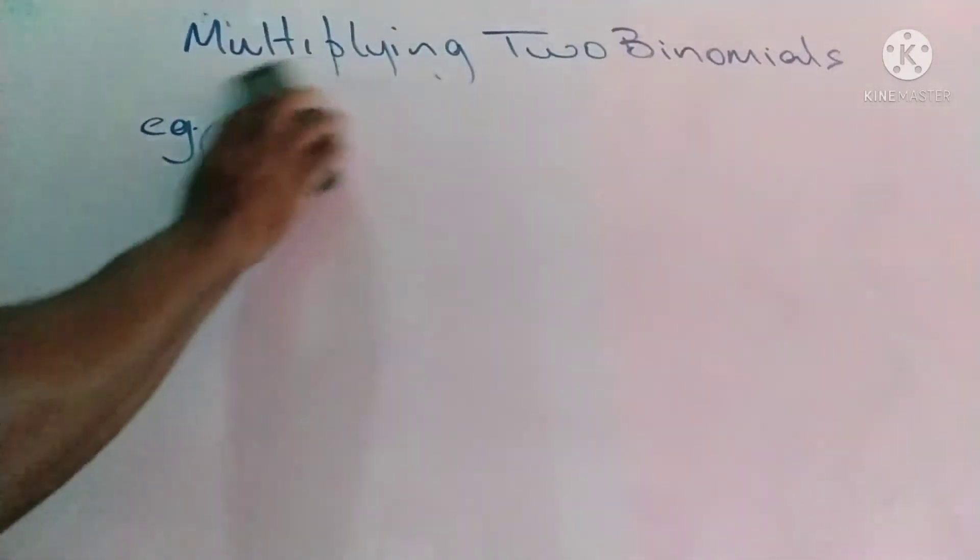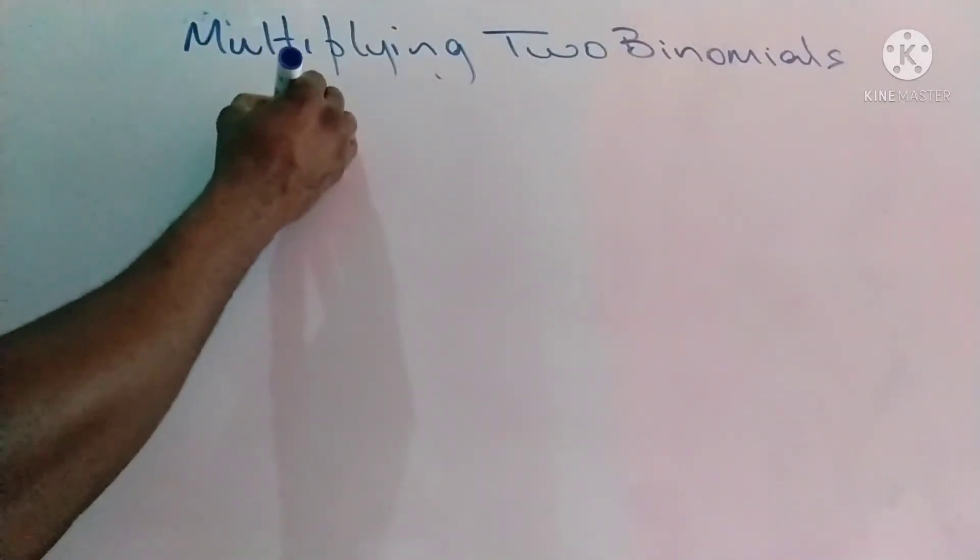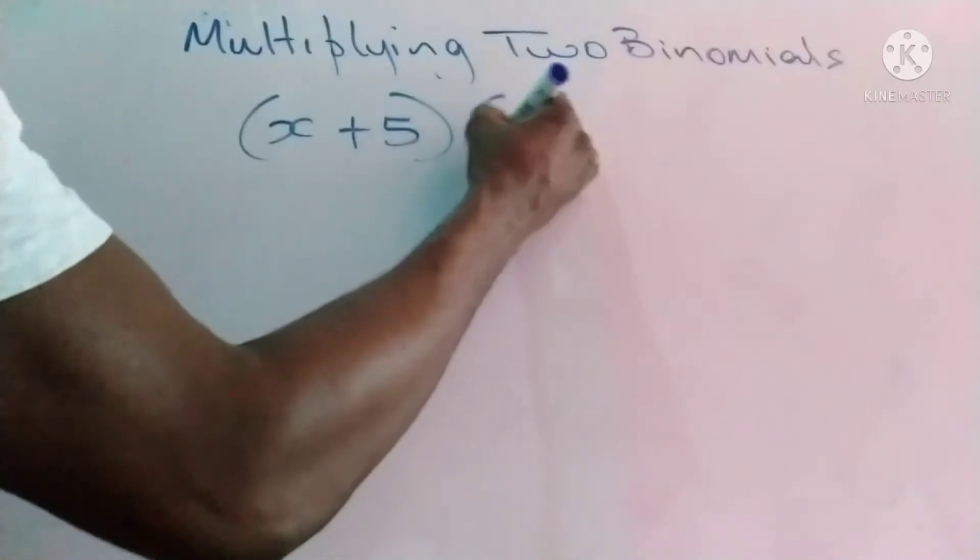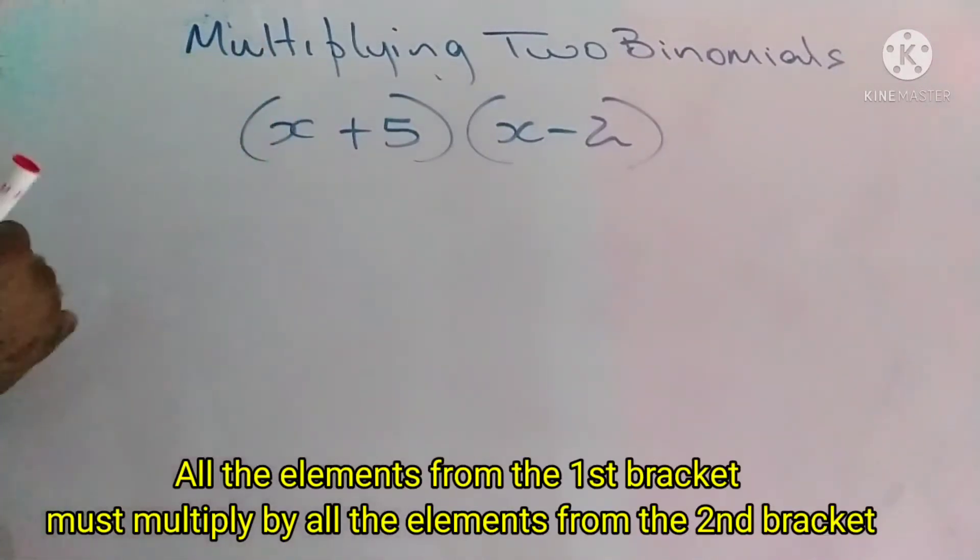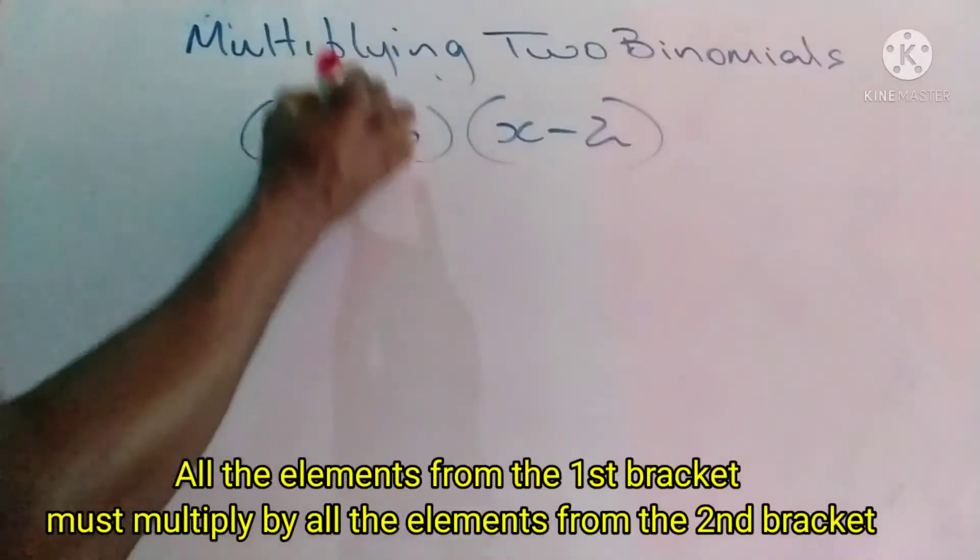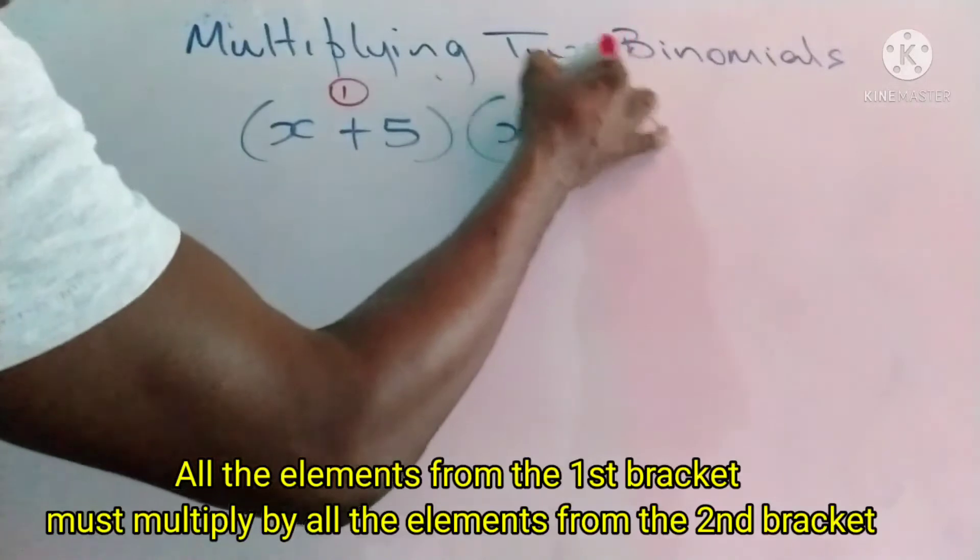What we want to do in this session is quickly look at how to multiply two binomials. We'll use a systematic process. In multiplying two binomials, every term from the first bracket must multiply every term from the second bracket.